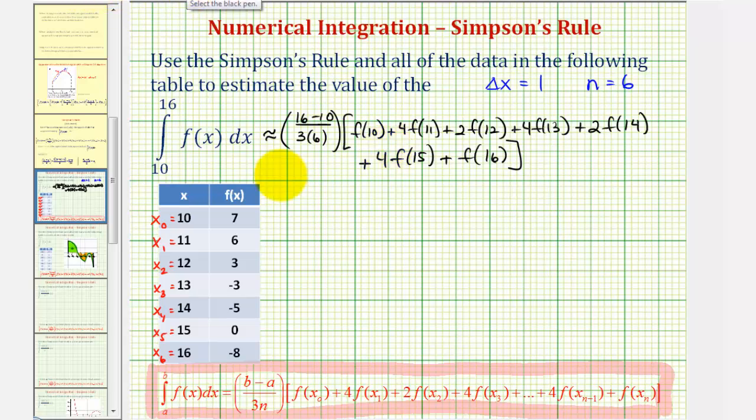Let's go ahead and simplify this. Here we have six over six times three, that's just one third, and then f of ten we can see is just seven, plus four times f of eleven, which is six, plus two times f of twelve which is three.